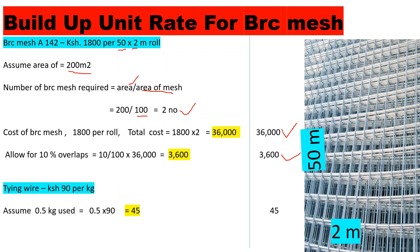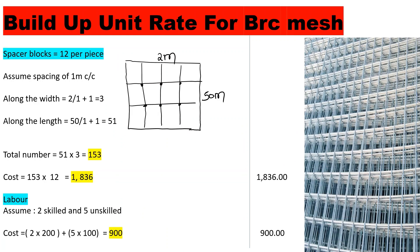For tying wire at 90 shillings per kg, we assume 0.5 kg is used. The cost will be 0.5 times 90, giving us 45 shillings.